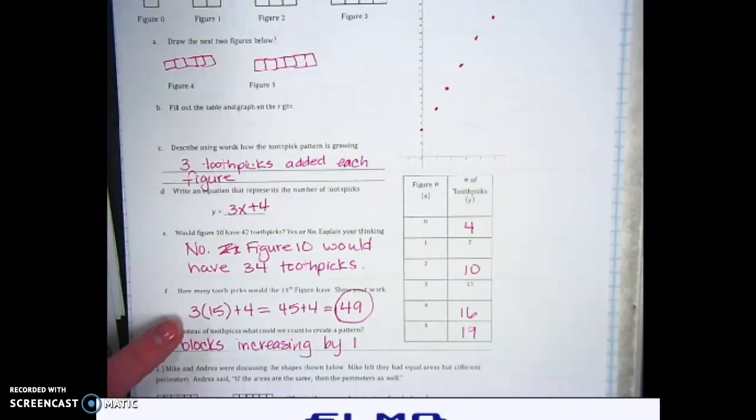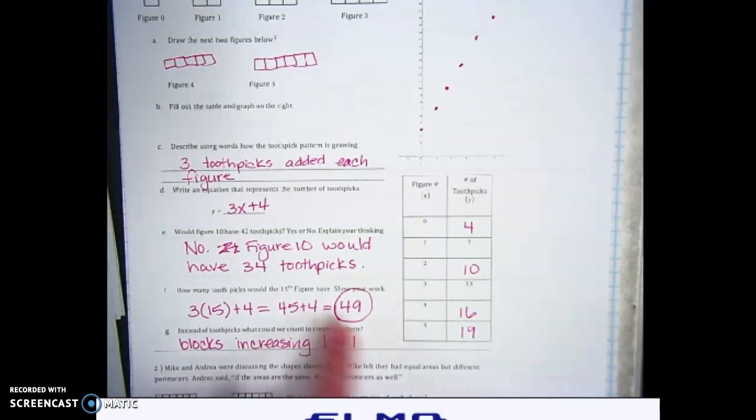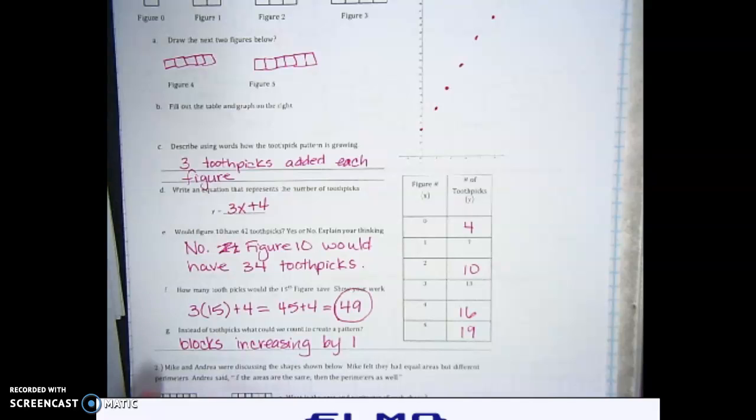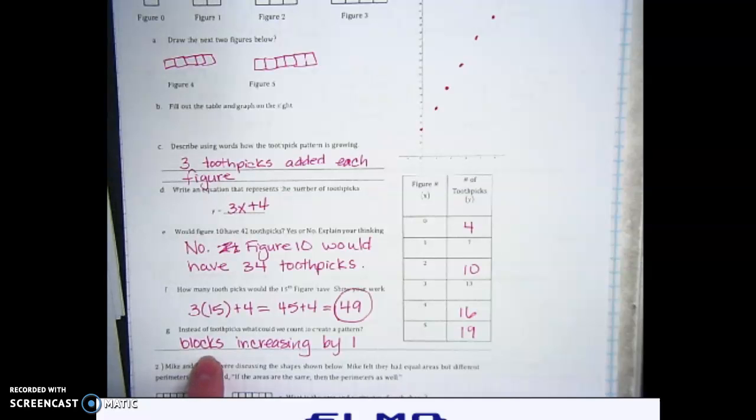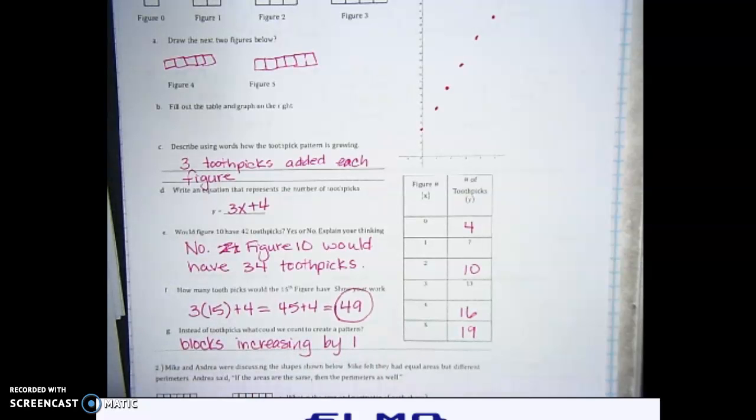The 15th figure would have 3 times 15, which is 45, plus 4 more, so 49. Part G says, instead of toothpicks, what could you recount to create a pattern? I said you could use blocks, and it would just increase by one each time.